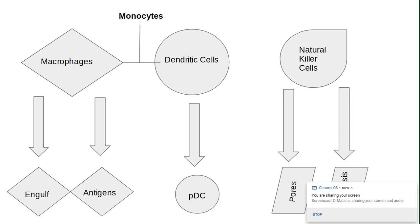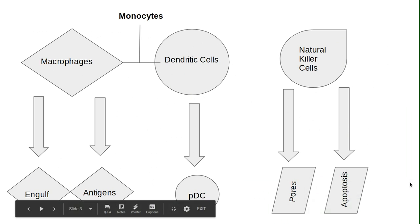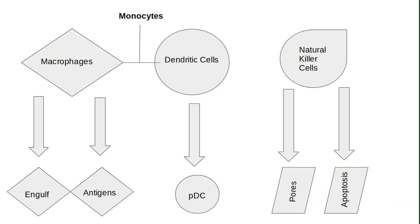Natural killer cells are able to detect features on the membranes of abnormal cells — cells that are not of the host — such as virus-infected cells or cancer cells.